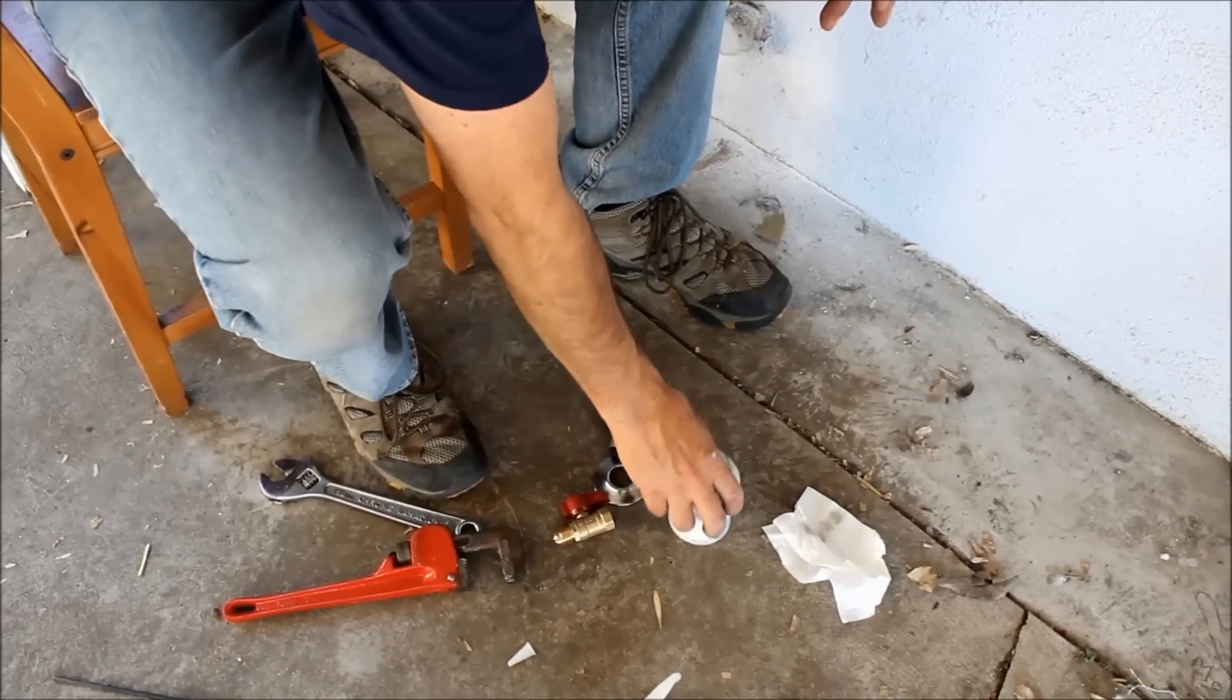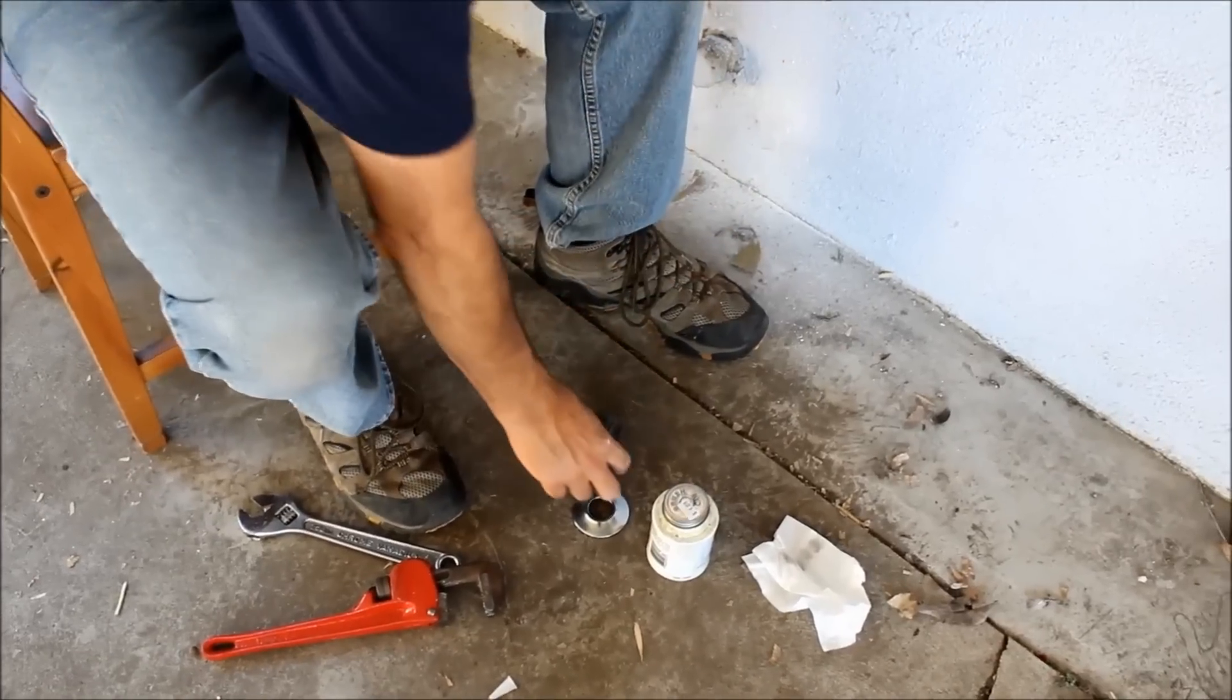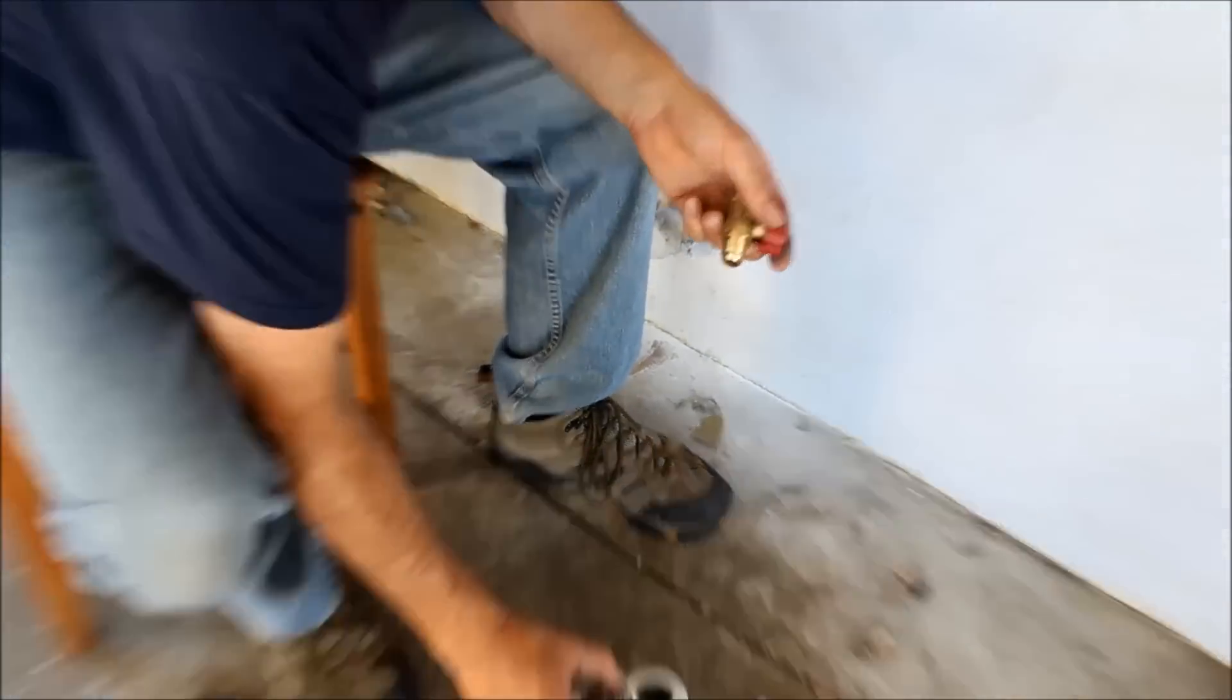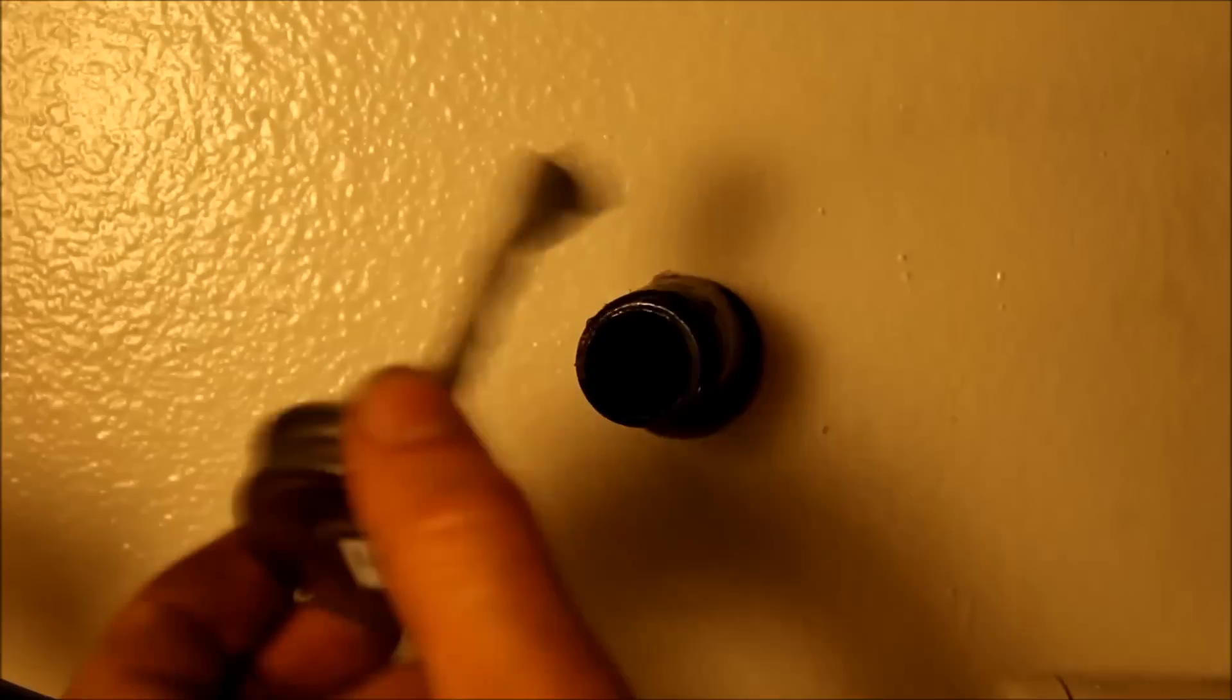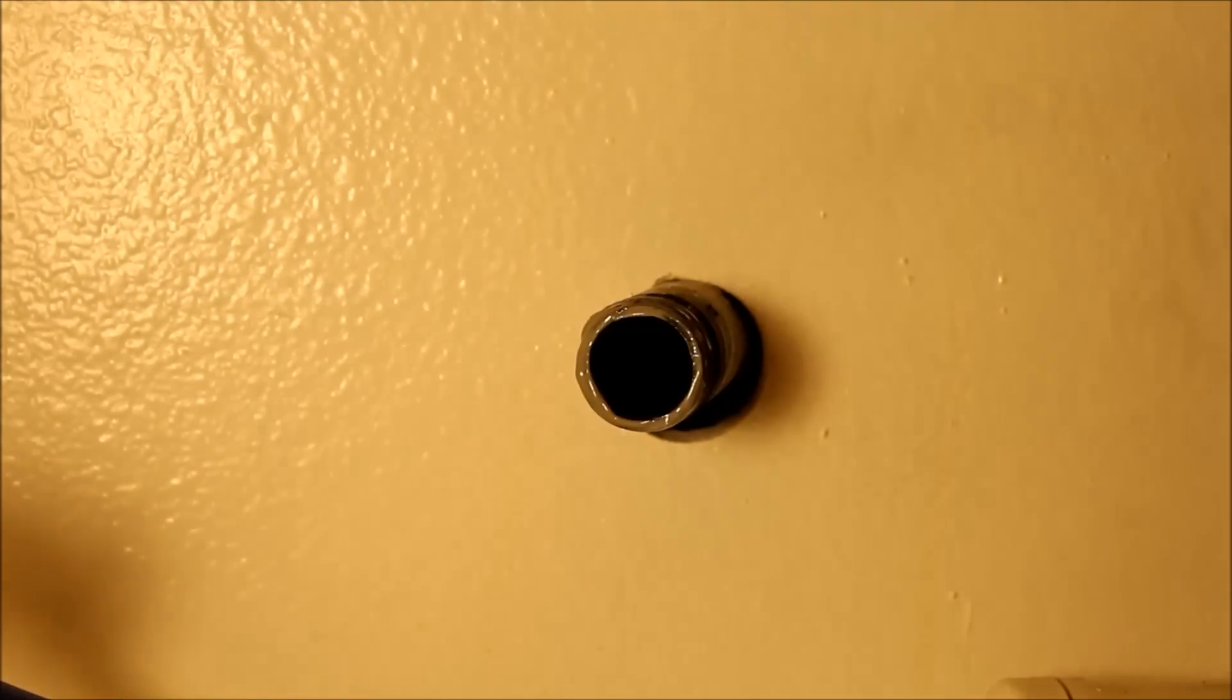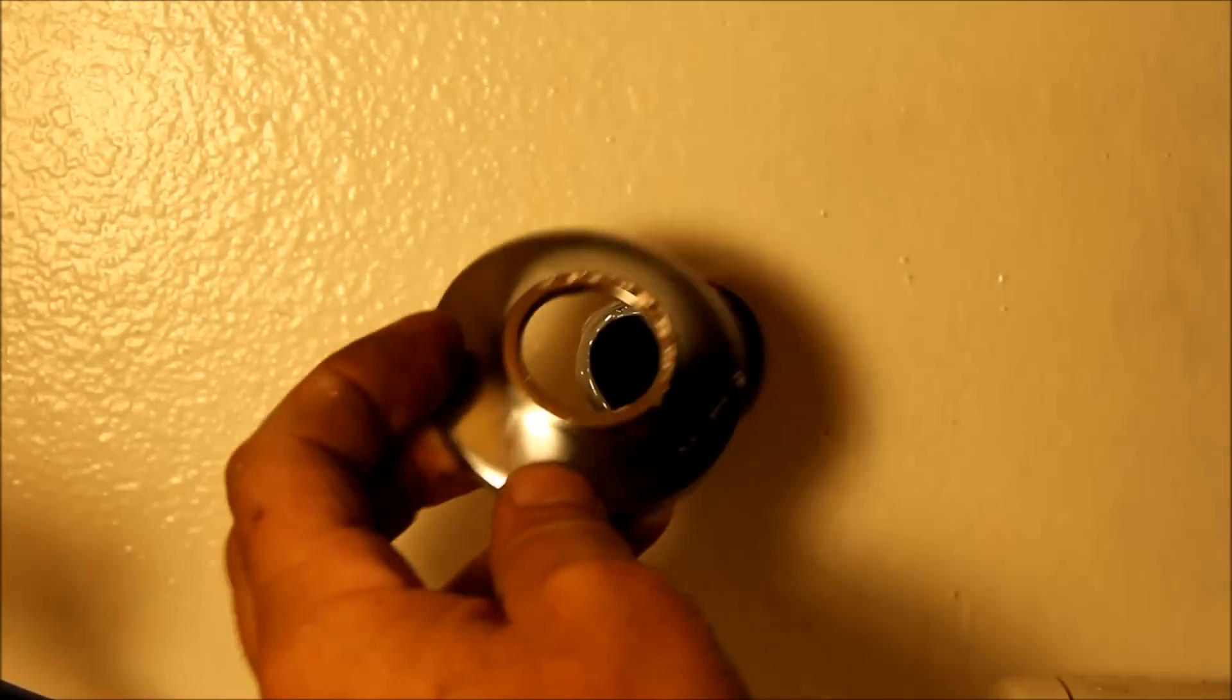I'm going to start assembling the parts which are going to go inside the house. So the valve, the nipple, the reducer, and the wall plate. I'm going to put pipe thread compound around the threads. Then I'm going to put on the wall cover. I should have put on the wall cover first, but I did it backward.